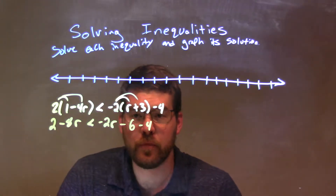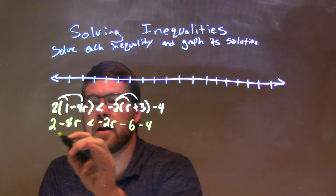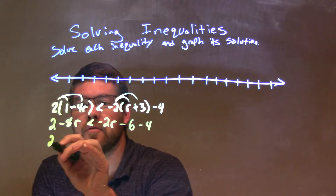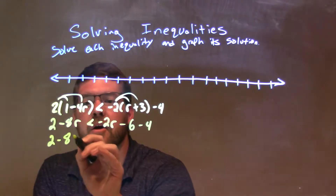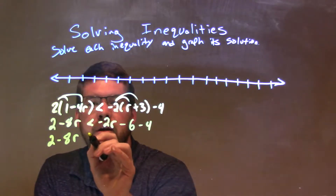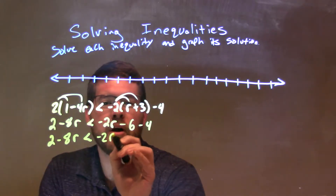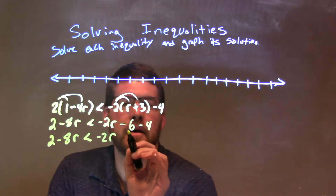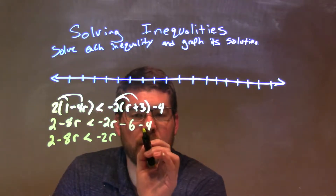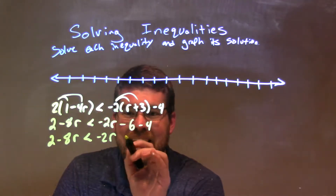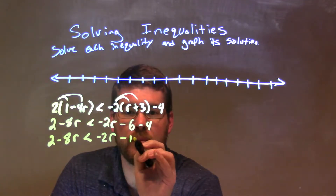Let's simplify the right-hand side a little bit. So we have 2 minus 8r less than negative 2r, and negative 6 minus 4 is negative 10. It comes together to be negative 10.